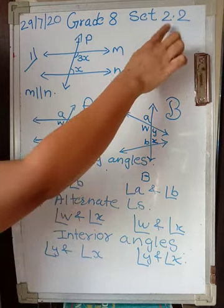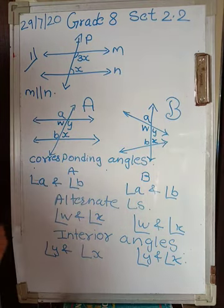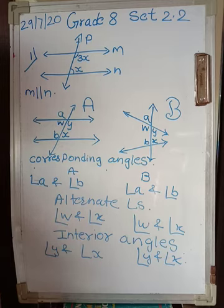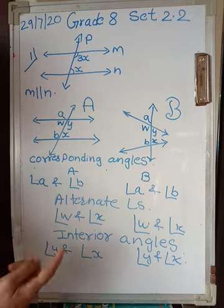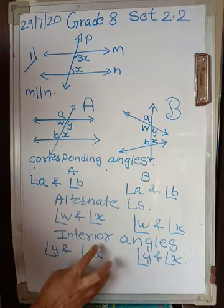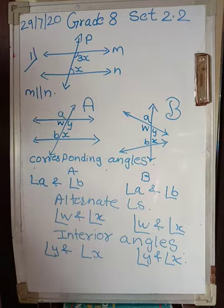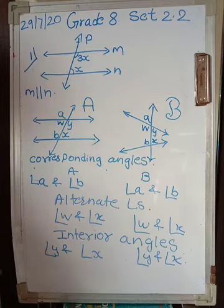We have seen during Set 2.1 — the set before this — what we mean by corresponding angles, what are alternate angles which are of two types: interior alternate and exterior alternate, and what we mean by interior angles. Before we go to Set 2.2, we need to understand a few properties of these angles, and it depends upon the type of lines.